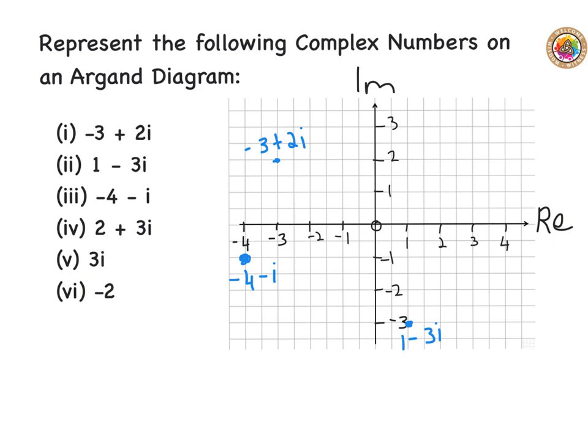The next one we have is two plus three i. I go to two on the real number line and up to three on the imaginary axis — so that point is two plus three i.